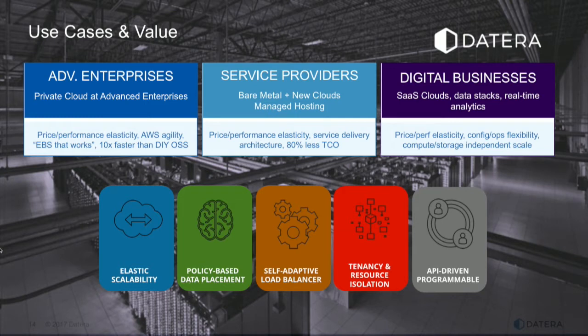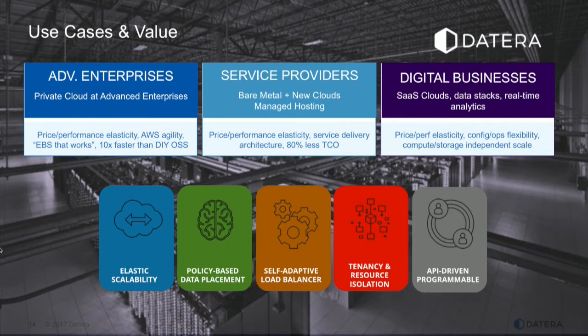The key tenets of our architecture are elasticity in terms of how we scale and shrink. Surprisingly, customers care as much about shrinking as scaling. Decommissioning old hardware and adding new hardware is very common now because the hardware generation lifecycle is about 18–24 months and people want to keep up to speed. The other aspect is data placement — more than just data placement, how resources are placed and how we arbitrage price performance — that's a very fundamental concept for us.